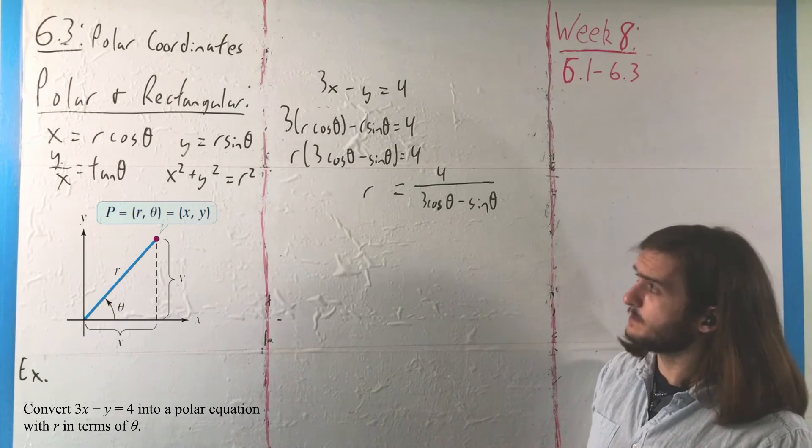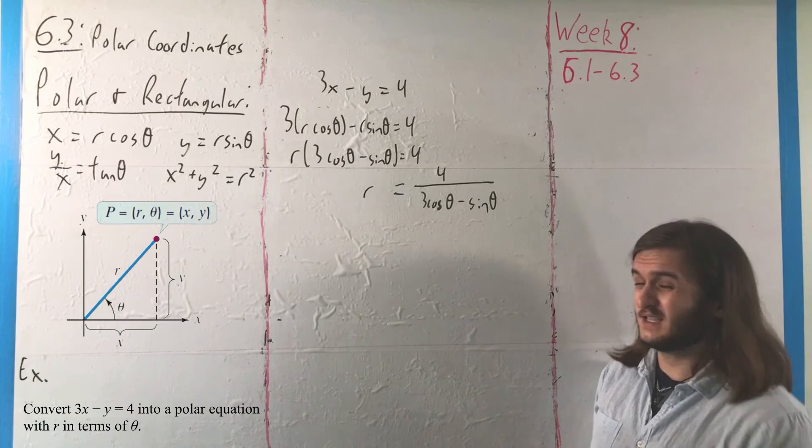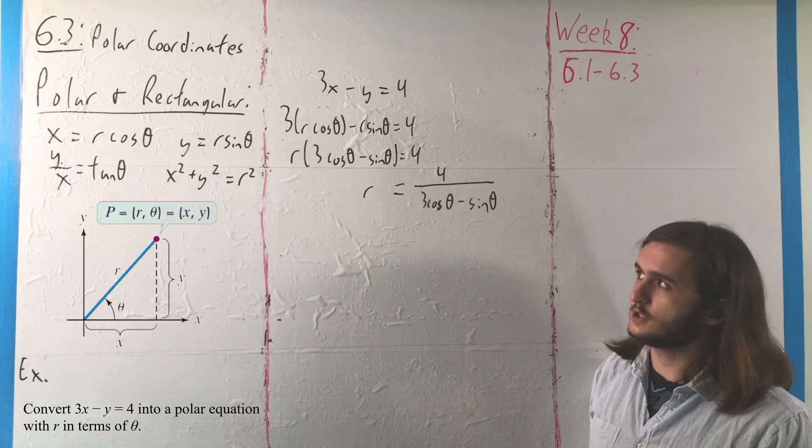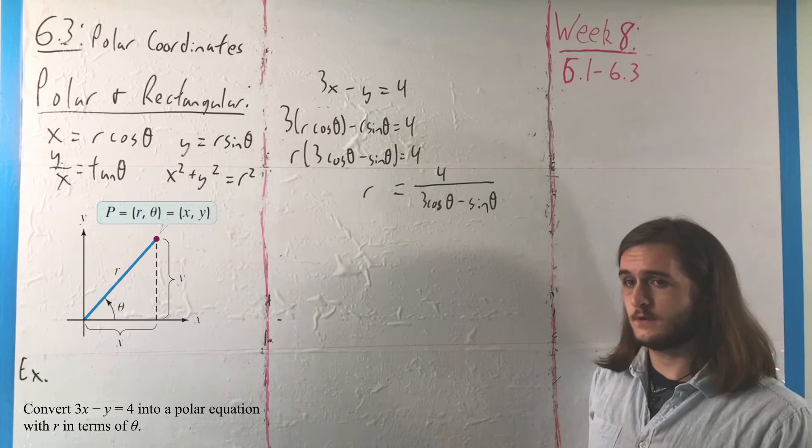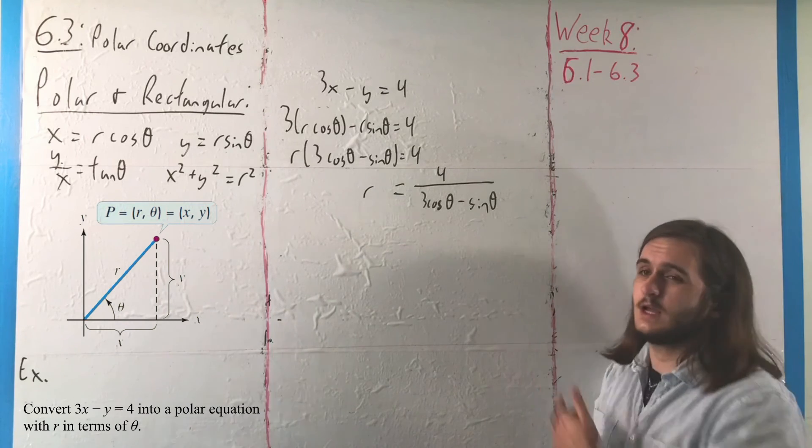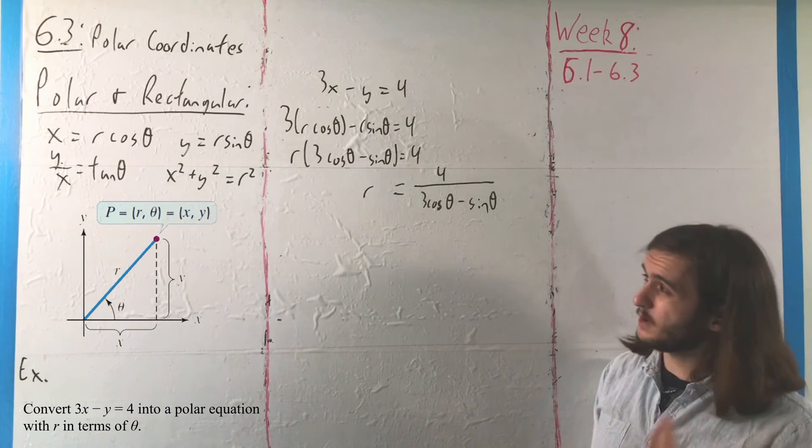I believe it would be. So, because it's a nice linear function, it has a very natural representation in terms of rectangular, and then a not-so-natural representation in terms of polar.